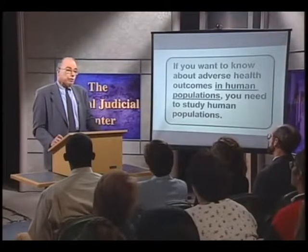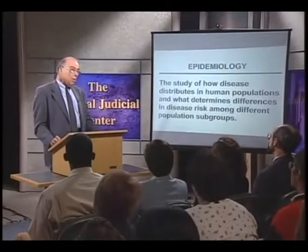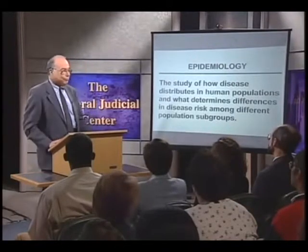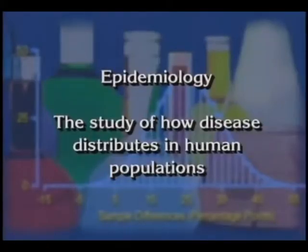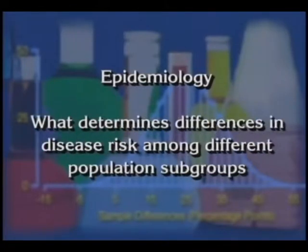Epidemiology plays this role. What is epidemiology? This slide shows you one such definition: it is the study of how disease distributes in human populations and what determines differences in disease risk among different population subgroups. Why does one group of people have a higher risk of disease than another, and what can we learn from that? How can that help us to prevent disease?